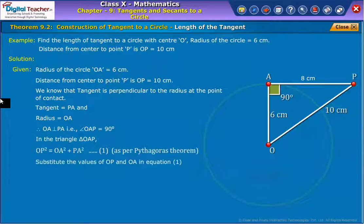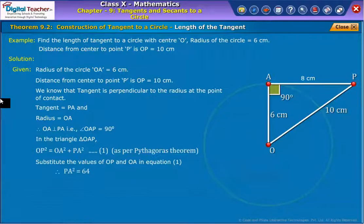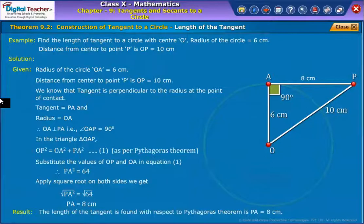By further simplification we obtain PA equal to 8 cm. Results: the length of the tangent is found with respect to Pythagoras theorem, PA is equal to 8 cm.